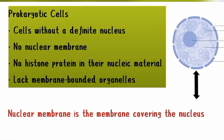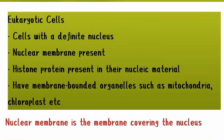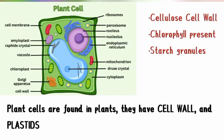Eukaryotic cells are the direct opposite of prokaryotic cells. They have a definite nucleus with a nuclear membrane, they have histone proteins, and they have membrane-bound organelles. Examples of membrane-bound organelles include the mitochondria, the chloroplast, and the endoplasmic reticulum, and so on.